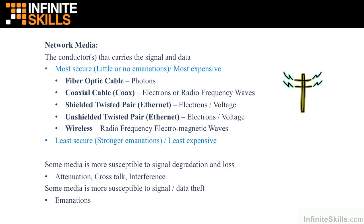The grounded wire tends to disrupt the propagation of the emanated field around the data-carrying wire. As electrons carry the signal through that wire and propagate into the air, the grounded wire wrapped around it disrupts that magnetic field, providing some marginal shielding. Shielded twisted pair offers slightly better emanation security but is more expensive and difficult to work with. Unshielded twisted pair, however, has dominated the marketplace and is by far the dominant network media used for corporate networks.